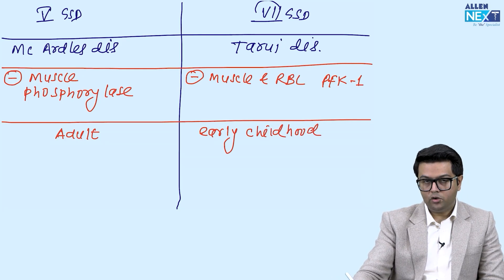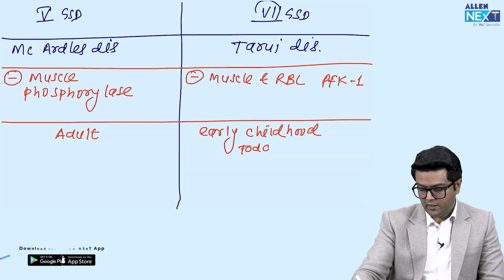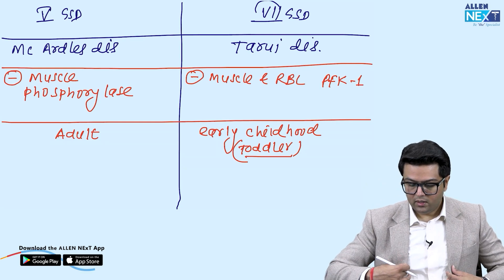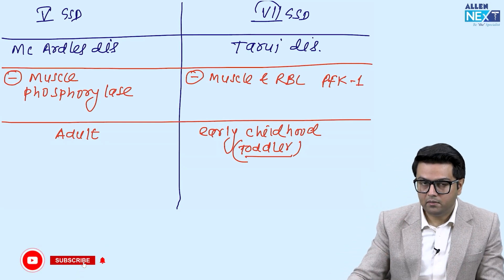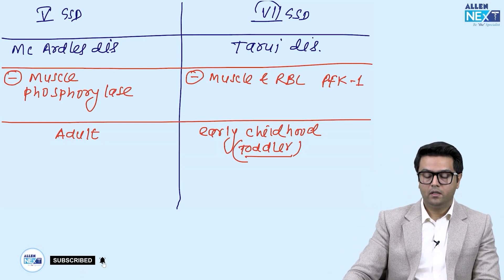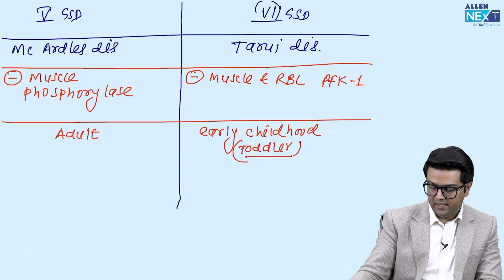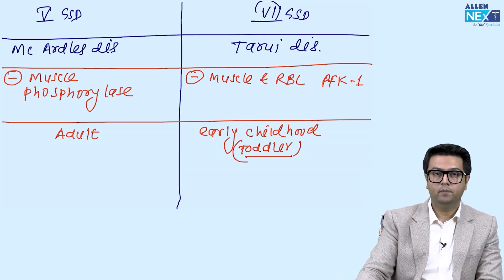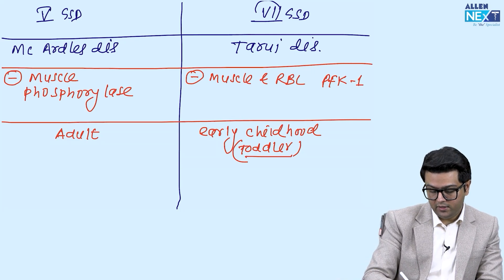We can remember like Tarui's patients are mostly diagnosed as toddlers, babies who are having the muscle weakness. At the age when they started walking, they were unable to maintain their playful activities because of the muscle weakness.